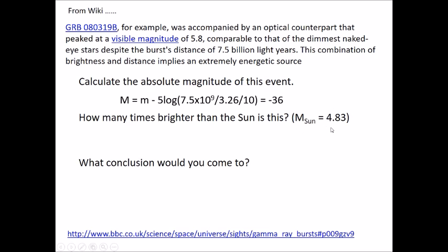Compare that with the absolute magnitude of the Sun of 4.83. The difference here: 4.83 take away -36, so we've got about a 41 difference in absolute magnitude. So 2.51 to the power of 40.83 equals 2.1 × 10^16—that's 20,000 million million times brighter than the Sun.